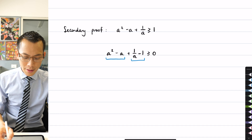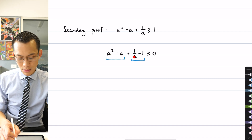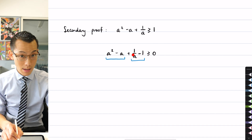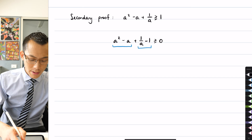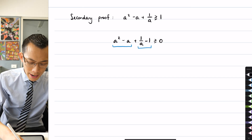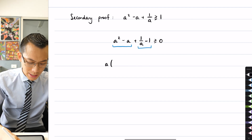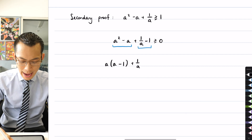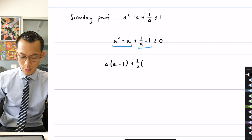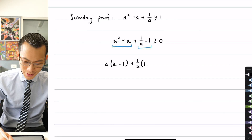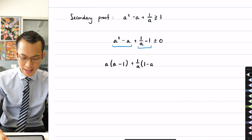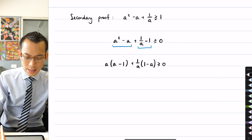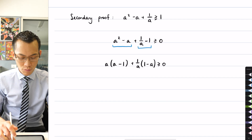Hopefully you've noticed that the pairs are opposite in sign — one's positive, one's negative — and they differ by a factor of a. There's a symmetry here you can recognize. To factorize, I'll take out a factor of a from the first pairing, giving a minus one, and then take out a factor of one over a from the second pair. One over a times one leaves one, and one over a times negative a gives minus one, after the a's cancel.